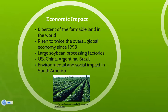Soybean production has grown tremendously, increasing to twice the overall global economy since 1993 and accounting for the use of about 6% of the global farmable land. The traditional methods of preparing soy foods remain, but these traditional soy foods are also now produced in large soybean processing factories. The U.S. is the country with the highest soybean processing capacity, followed by China, Argentina, and Brazil.